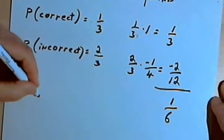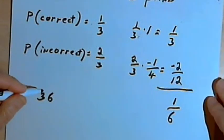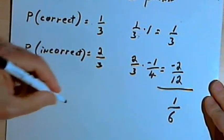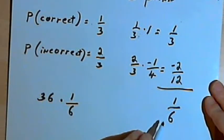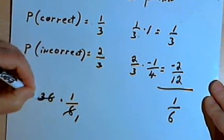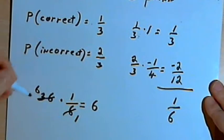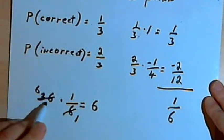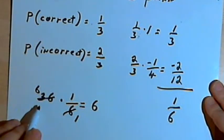If there were thirty-six questions where you could rule out two answers and choose from three remaining, your expected value of one-sixth of a point per question means you would gain six points total by guessing. You might get all thirty-six right and gain thirty-six points, or if you got them all wrong, losing a quarter point each, you would lose nine points.